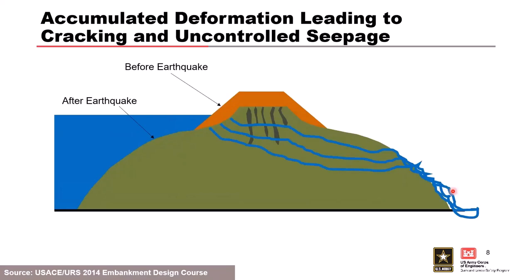The final scenario looks similar to the overtopping case, except you don't actually overtop. You have the potential for internal erosion — a concentrated leak erosion, most likely — through any cracks created in the dam. That serves as your initiating event, and then you determine if internal erosion would continue and progress to failure.